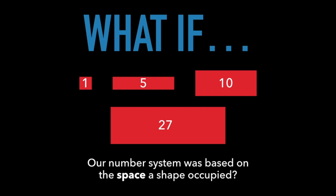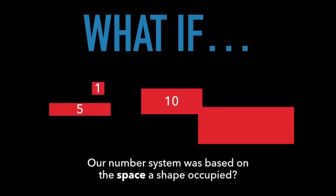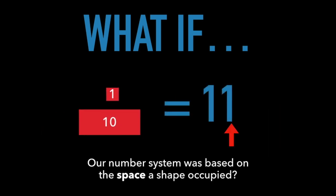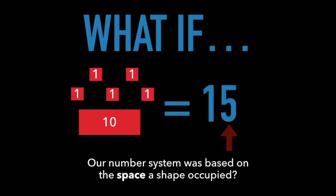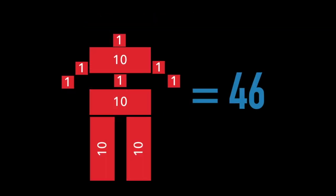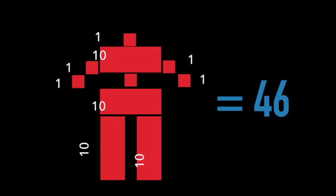Fortunately, the first two place values in our current number system really are predictable. They are 1s and 10s. So a 10 plus a 1 makes 11. A 10 plus a 5 makes 15. If you understand bigger numbers, you can make your art have larger numbers like this one, which shows 46. Of course, it wouldn't have all the 10s and 1s written on it.